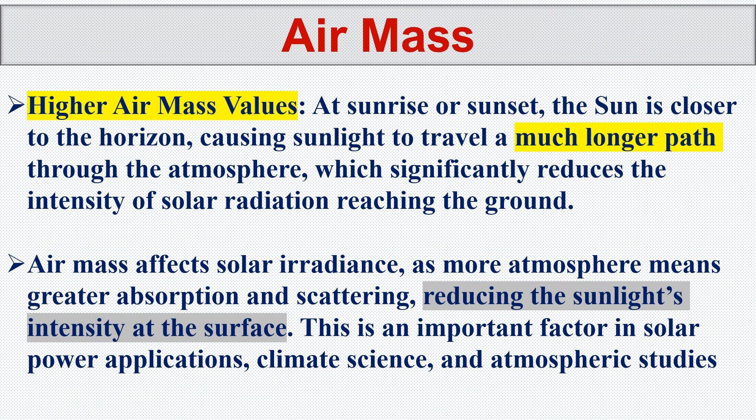At higher air mass values — during sunrise and sunset when the sun is close to the horizon — sunlight travels a much longer path through the atmosphere, which significantly reduces its intensity. We don't like air mass levels of 2 or 3 because of this longer distance. Air mass affects solar radiation: more atmosphere means greater absorption and scattering, reducing sunlight intensity at the surface. This is an important factor in solar power applications, climate science, and atmospheric studies.